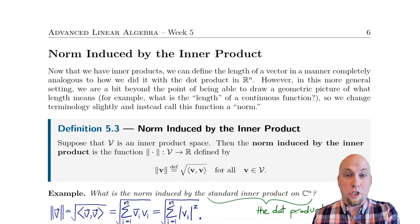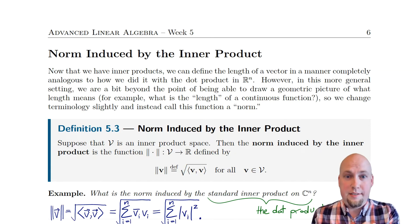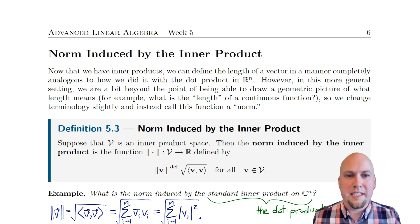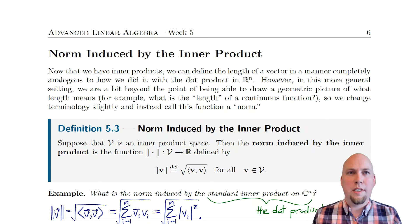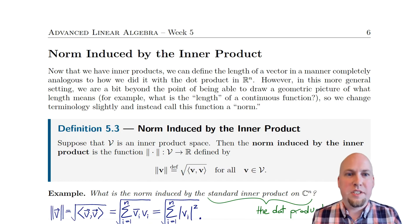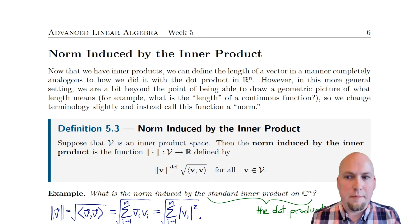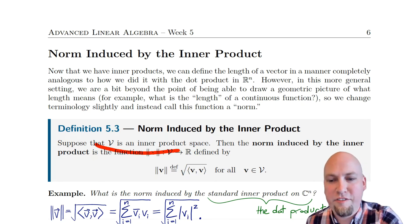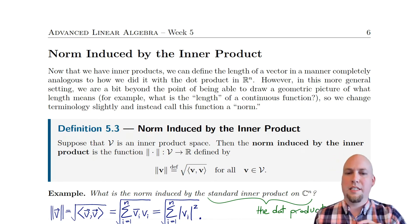Because the generalization of the dot product is inner products, it makes sense to do something similar in arbitrary vector spaces. The idea is we're going to get a way of measuring how long or how big vectors in arbitrary vector spaces are. So suppose that you've got V, which is an inner product space.